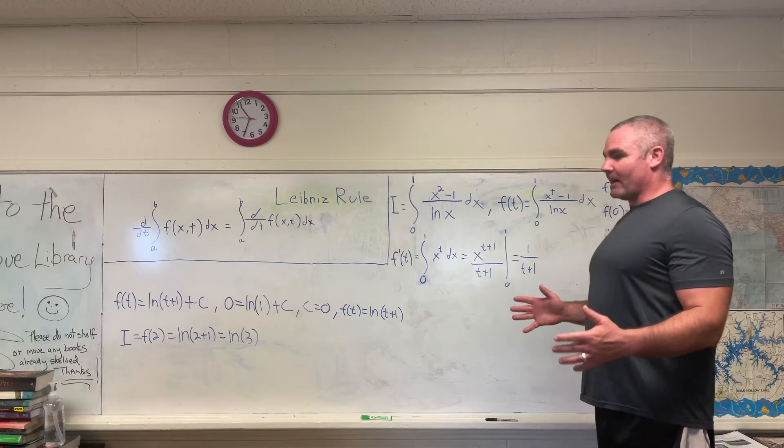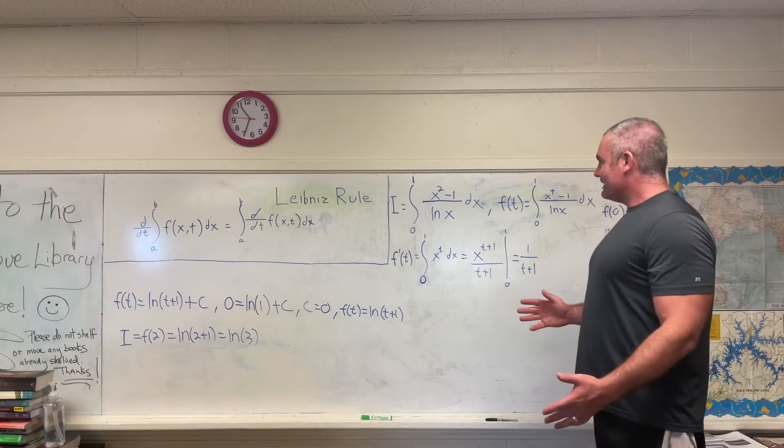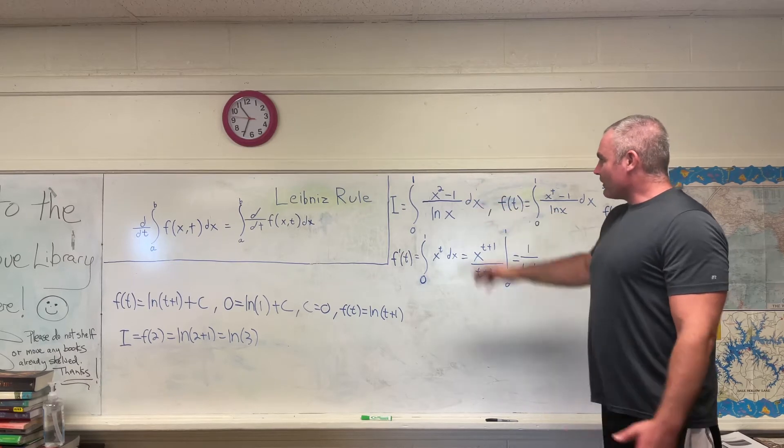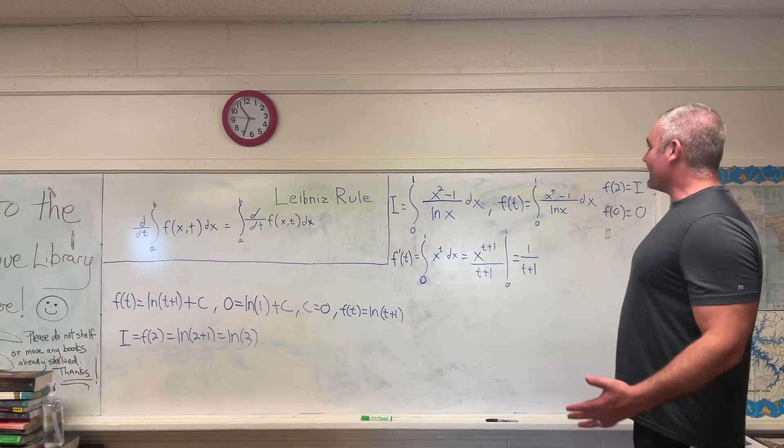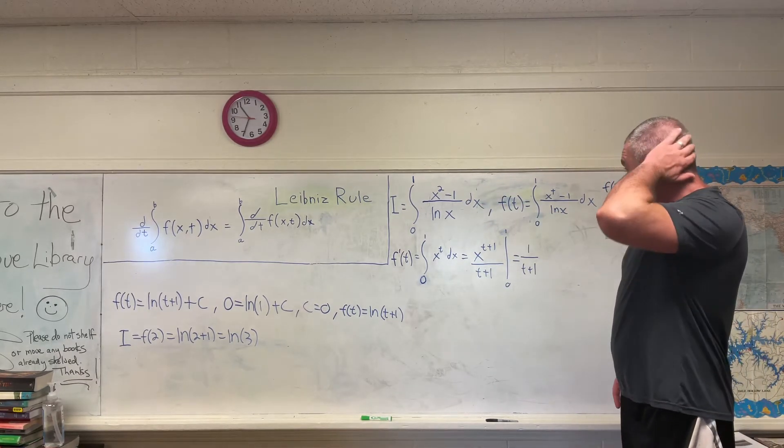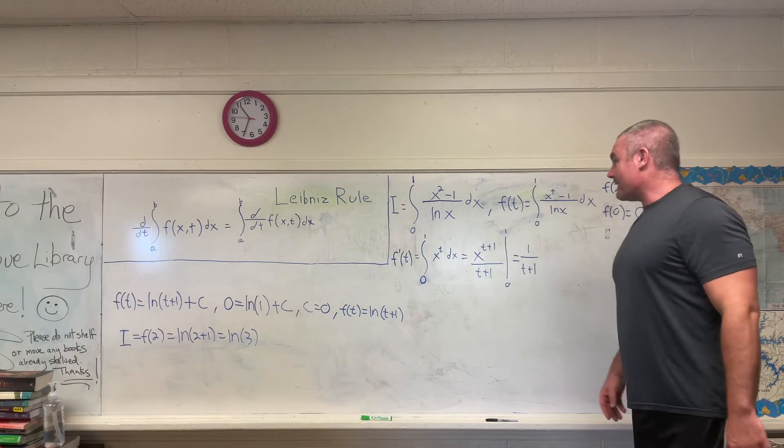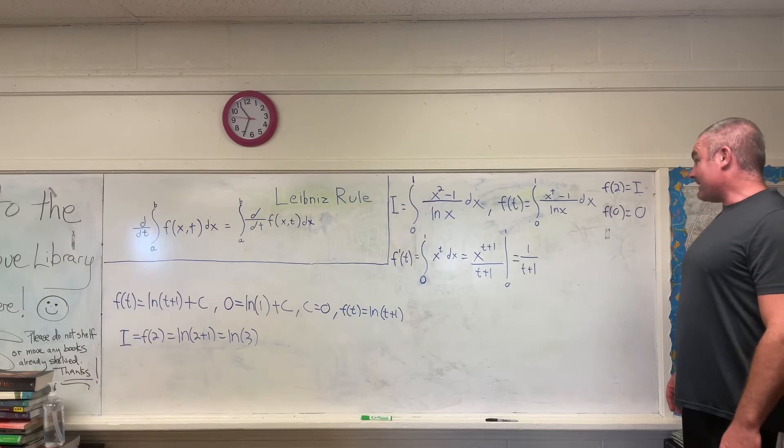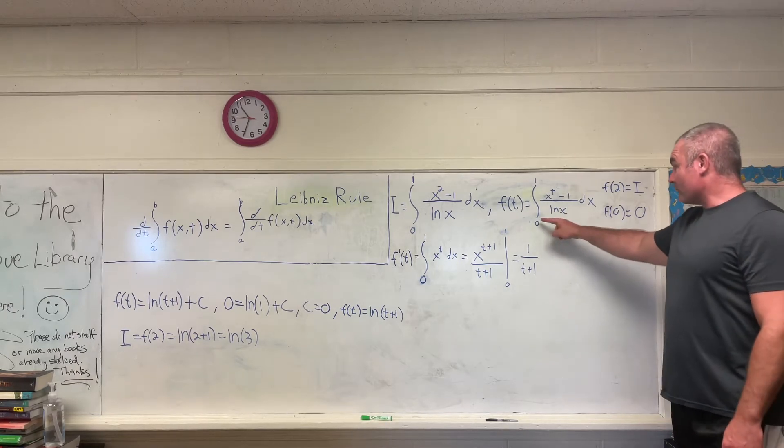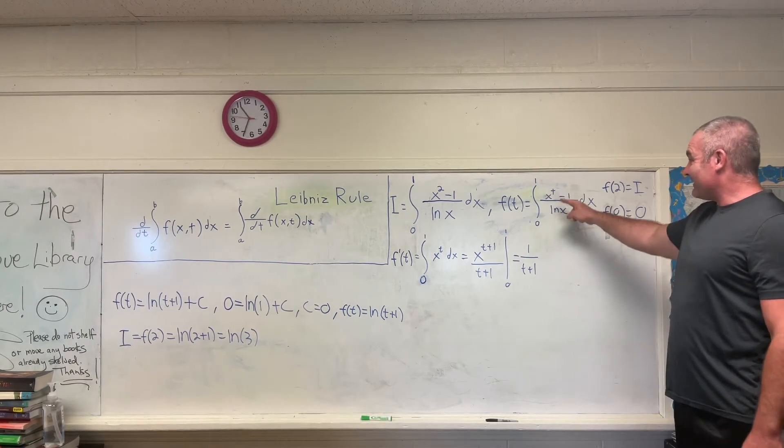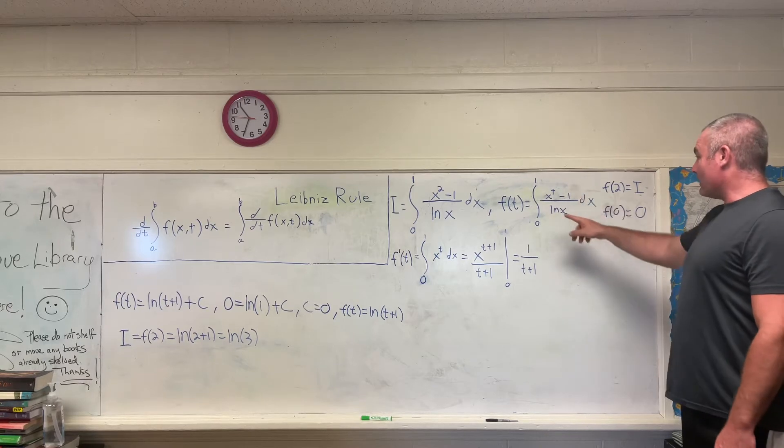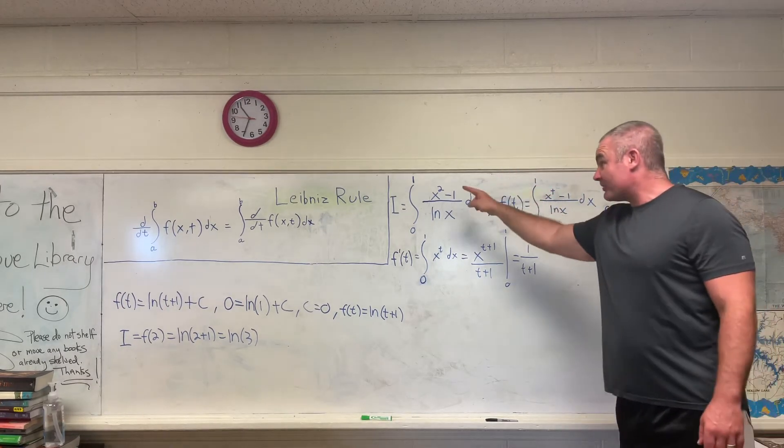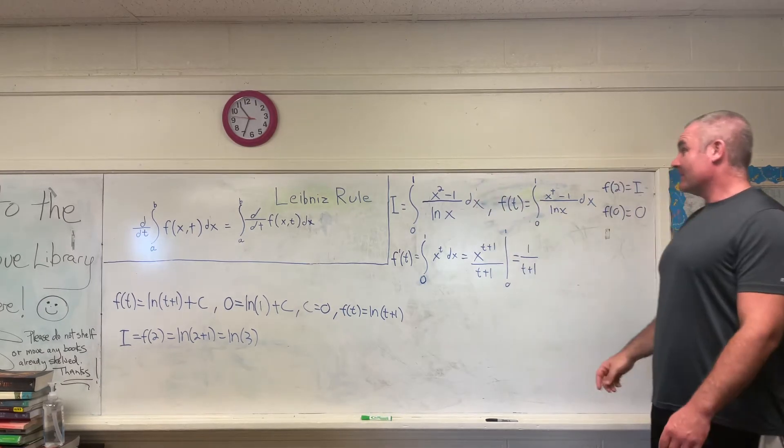Anyway, the whole idea of Feynman integration is to take an integral and then reparameterize it. In this case, what we're going to do is create a new function, a function of t, that's defined to be the integral from 0 to 1 of x to the t minus 1 over the natural log of x. And you can see that that very closely matches our original integral.